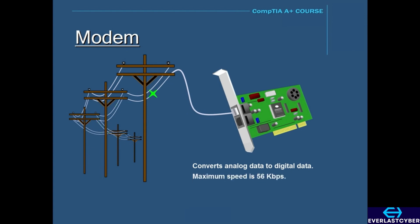And the maximum speed of most modems today is 56 kilobits per second.